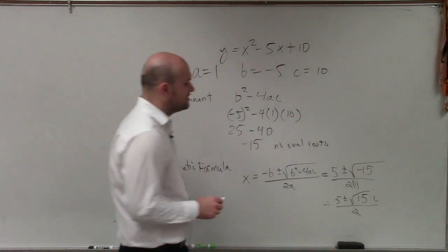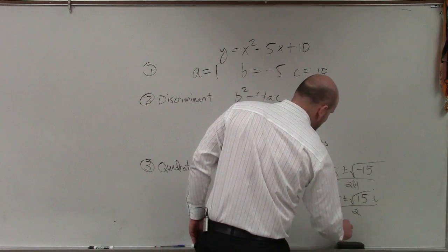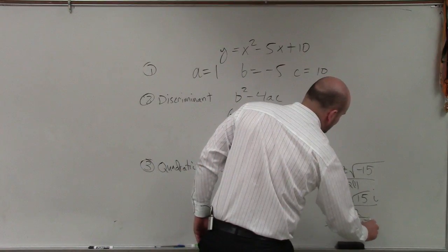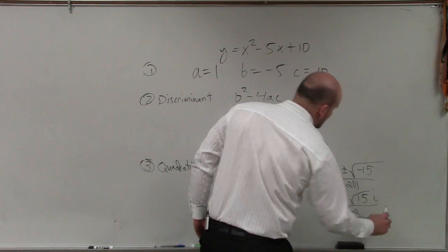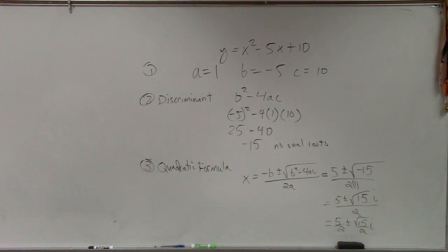And then the last thing we need to do, ladies and gentlemen, is separate that. We need to divide the 2 into both of these. So my final answer is 5 divided by 2 plus or minus the square root of 15 divided by 2 i. And that is going to be your final, final answer.